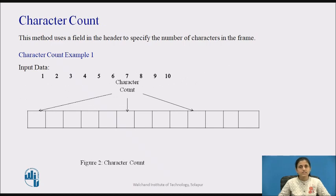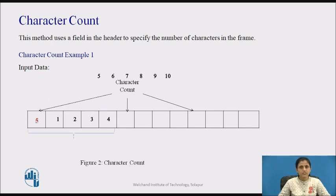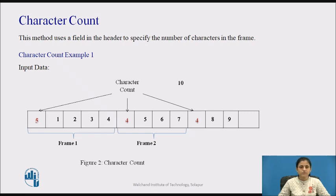The first framing method is character count, which uses a field in the header to specify the number of bytes in the frame. When the data link layer at the destination finds the byte count, it knows how many bytes follow and hence where the end of the frame is. This technique is shown in figure 2, where the data received from the network layer (1 through 10) is split into 3 frames of sizes 5, 4, and 4 bytes respectively.